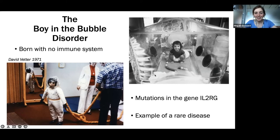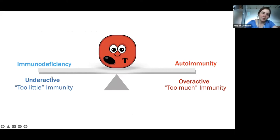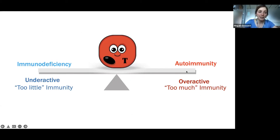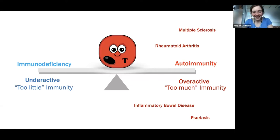T-cells sit at a delicate balance between immunodeficiency and autoimmunity. Defective T-cells lead to hypoactive - underactive - immunity, while on the other spectrum, overactive immunity results in diseases such as multiple sclerosis, rheumatoid arthritis, inflammatory bowel disease, and psoriasis.